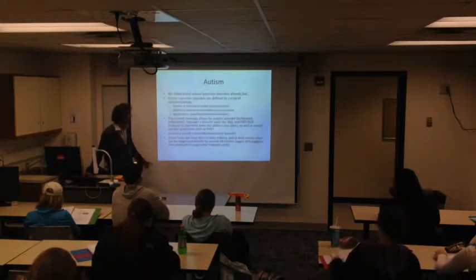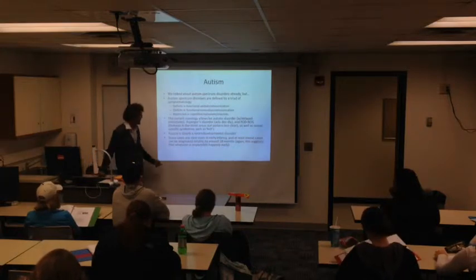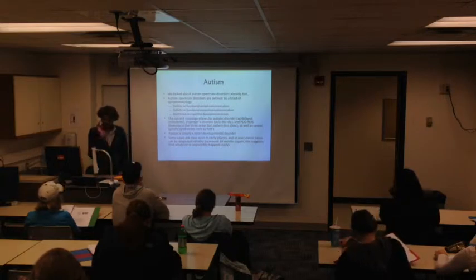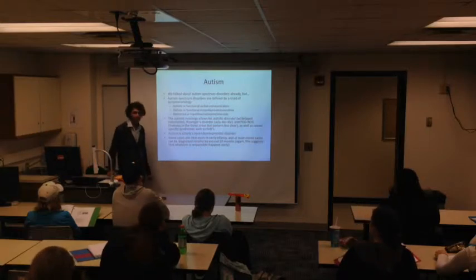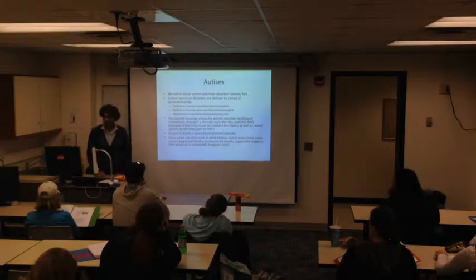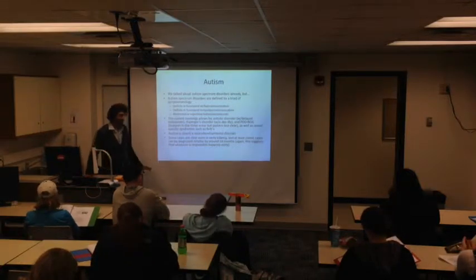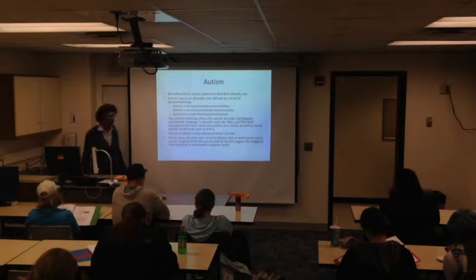Autism is clearly neurodevelopmental — in the classic cases it can be identified during the first year of life, and in many cases can be reliably diagnosed by eighteen months, and almost all cases by four or five years. So whatever is happening to explain autism is either occurring prenatally or very early postnatally. On the other hand, there's no single gene that explains a large number of cases, so it's not a simple genetic explanation. A lot of it is probably gene-environment interactions that are not really well understood. There's a study suggesting that living within a certain distance of an interstate — presumably due to pollution — is associated with higher risk for having a child with autism.